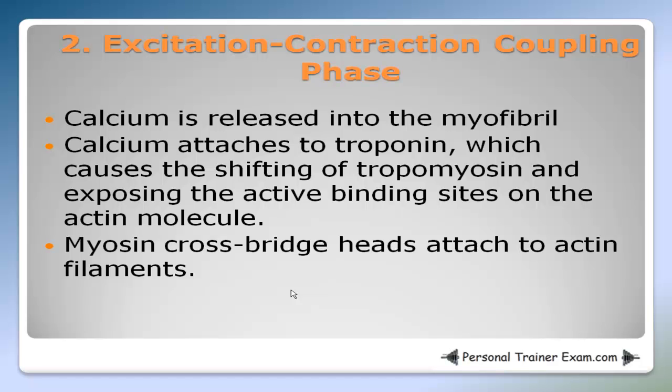In the second phase, the excitation-contraction coupling phase, calcium is released into the myofibril. Calcium attaches to troponin, which causes the shifting of tropomyosin and exposing the active binding sites on the actin molecule. Myosin cross-bridge heads then attach to the actin filaments.